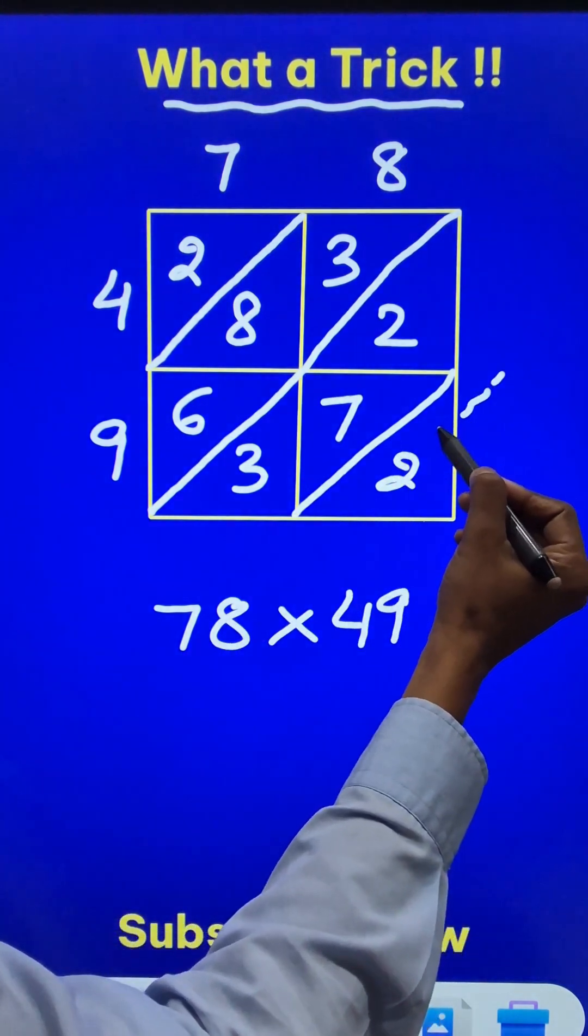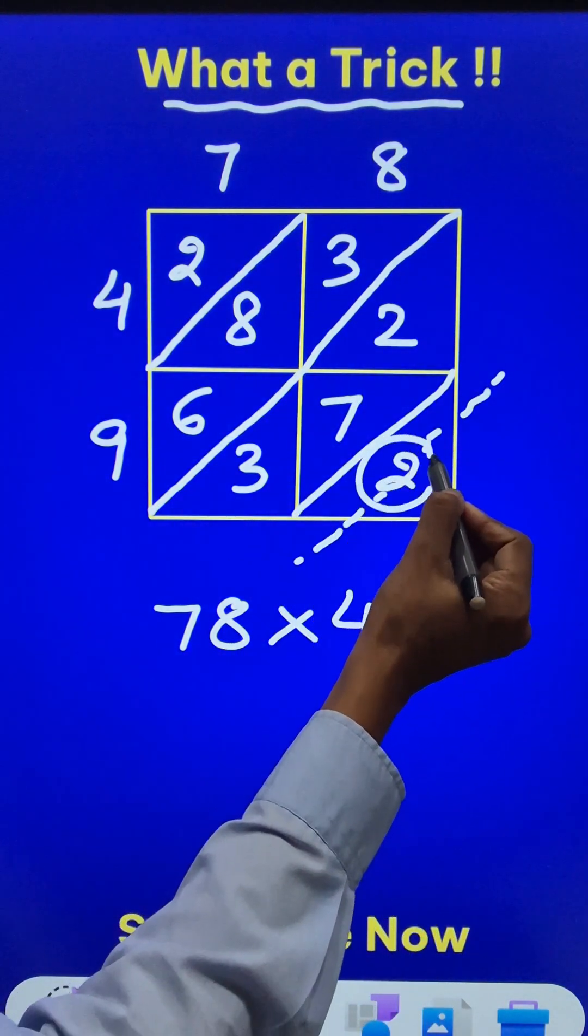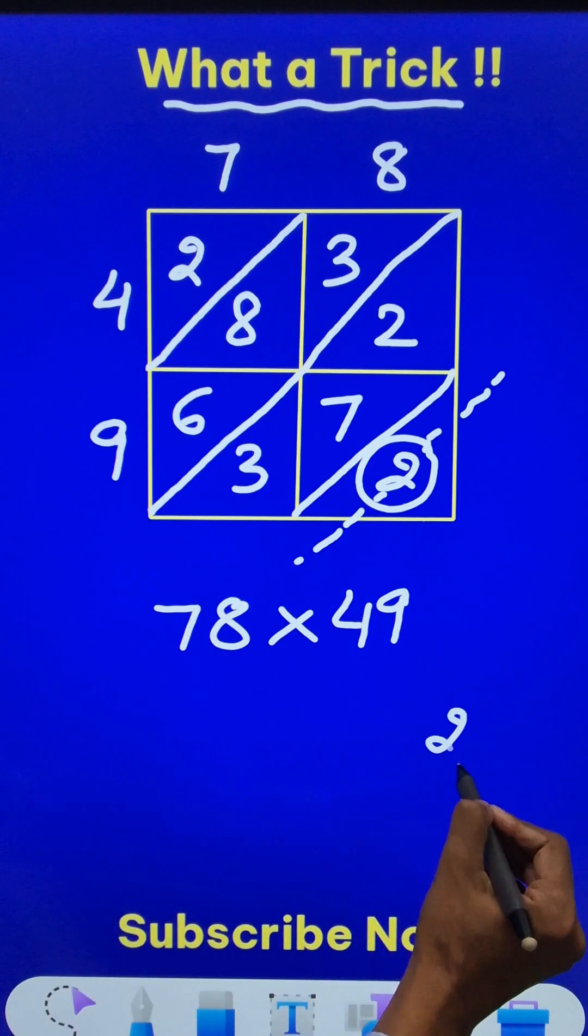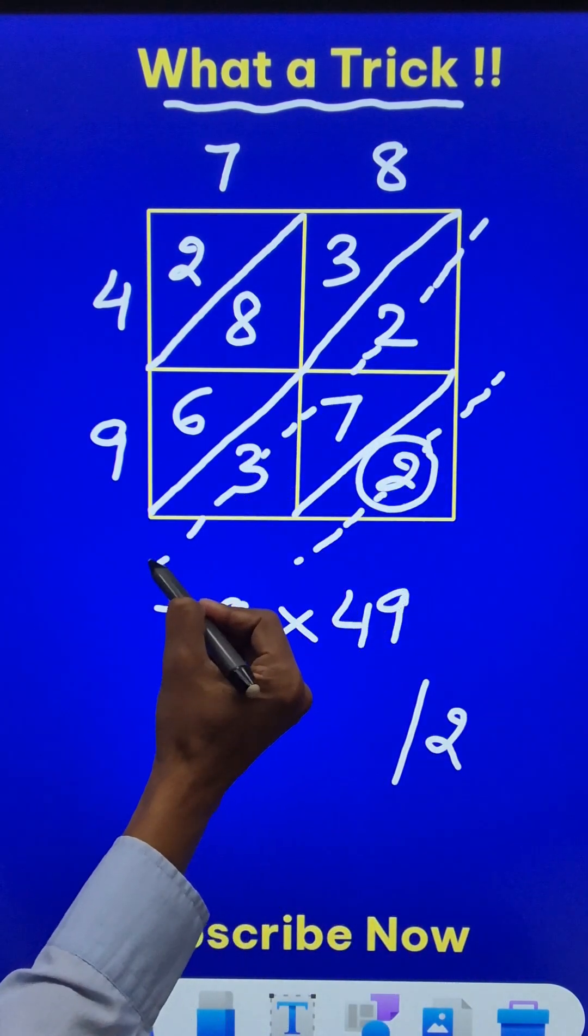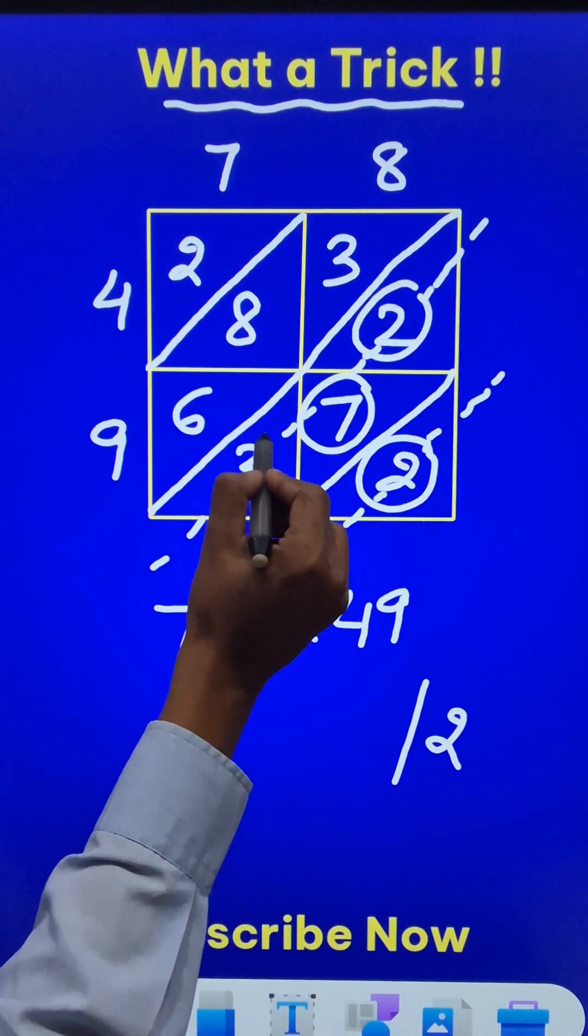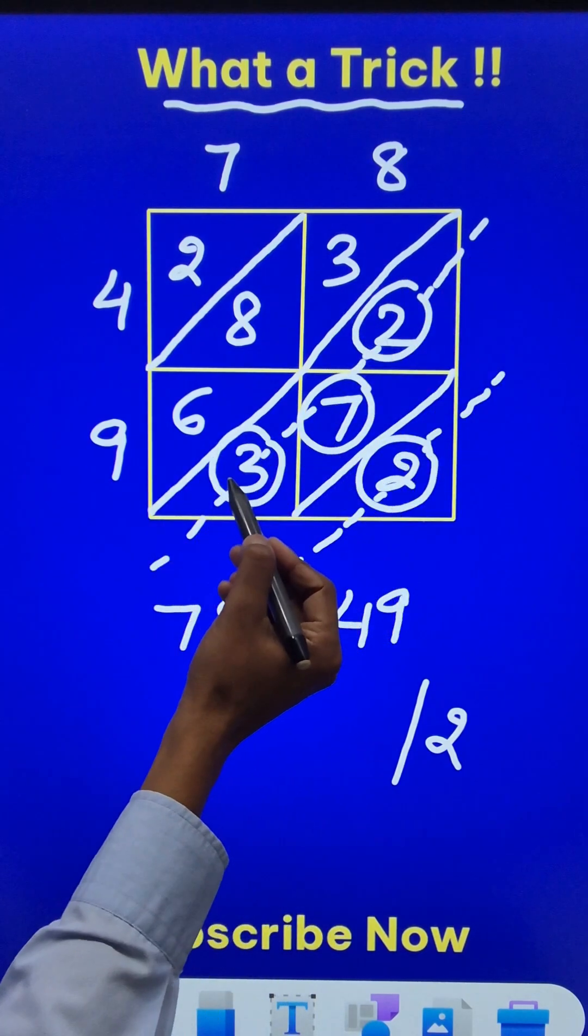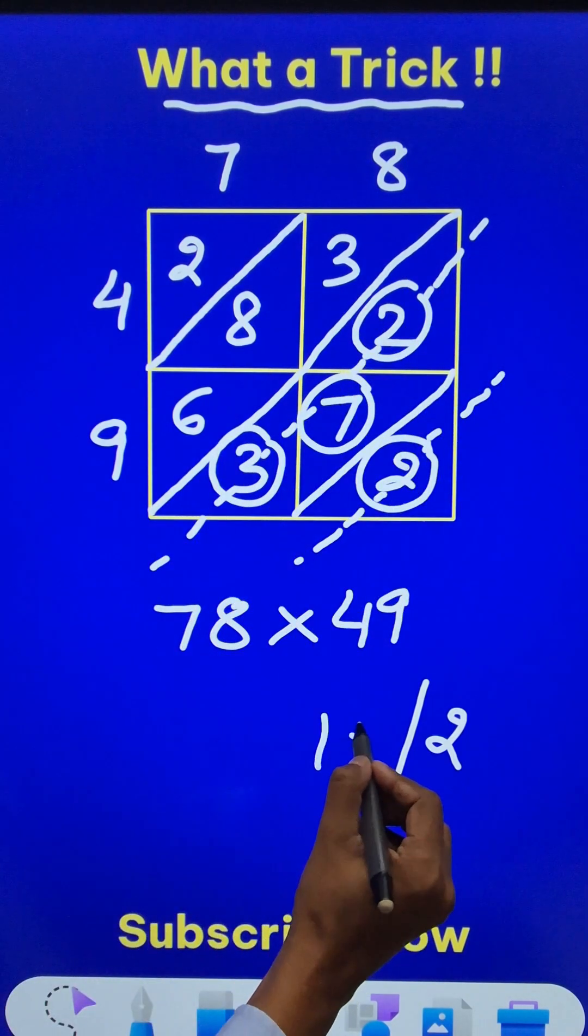Now, if you go along this diagonal, you will find that there is only one number 2. I will write 2 on the right hand side. Then if you go along this diagonal, you find that there are three numbers: 2, 7 and 3. Just add them. You get 7 plus 3, 10 plus 2, 12. I will write 12 here.